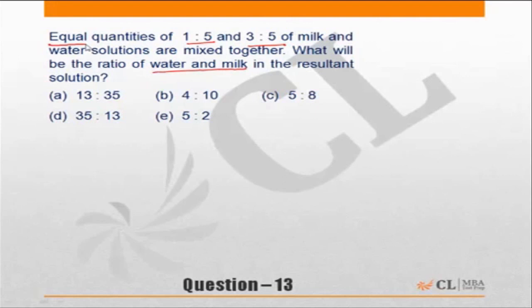The moment the question says equal quantities, you should look at equal quantities right here. Now we have two ratios: one is 1:5, another is 3:5. 1:5 means 1 plus 5 equals 6.